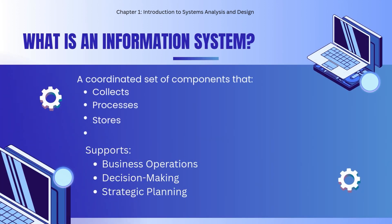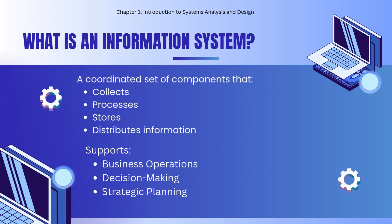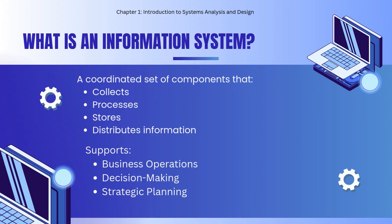What is an Information System? An Information System is a set of components that work together to collect, process, store, and distribute information. It supports three main areas. First, business operations — these are daily activities like payroll or sales transactions. Second, decision making — it provides managers with reports and data for informed choices. And lastly, strategic planning — helping organizations set long-term goals and directions.